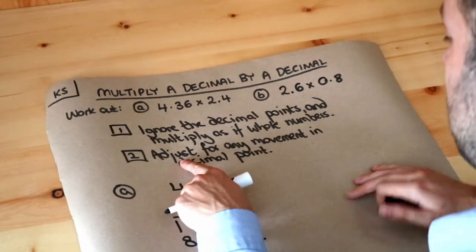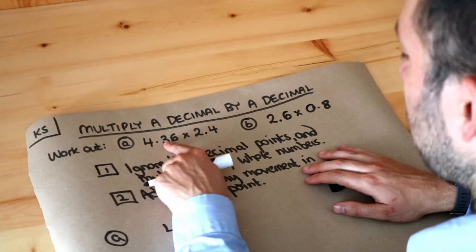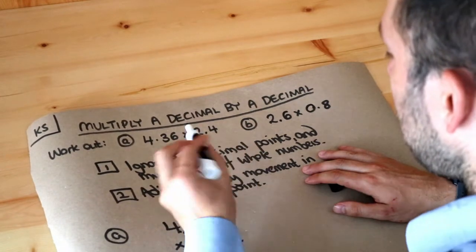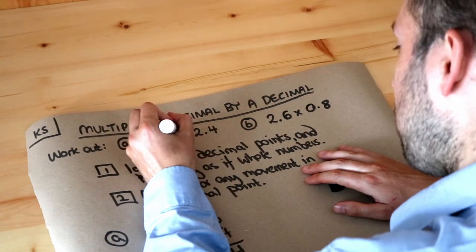Now we've got to do the second part: adjust for any movement in decimal point. Well, we did 436 times 24, but 4.36 has a decimal point here, so we need to move the decimal point